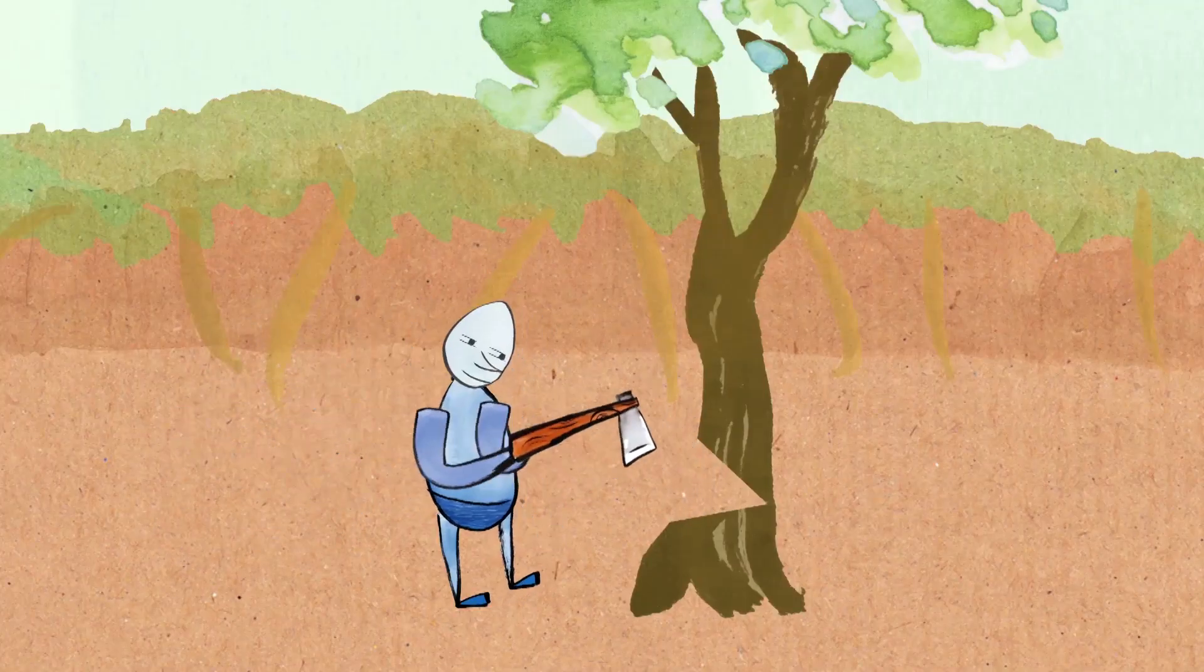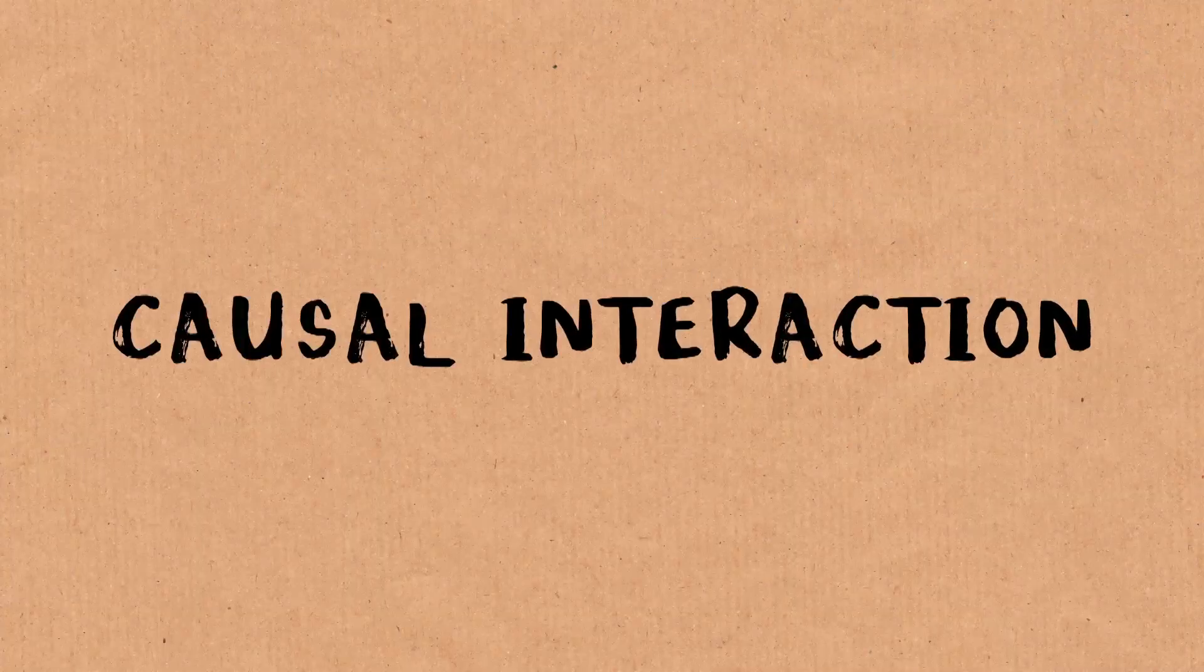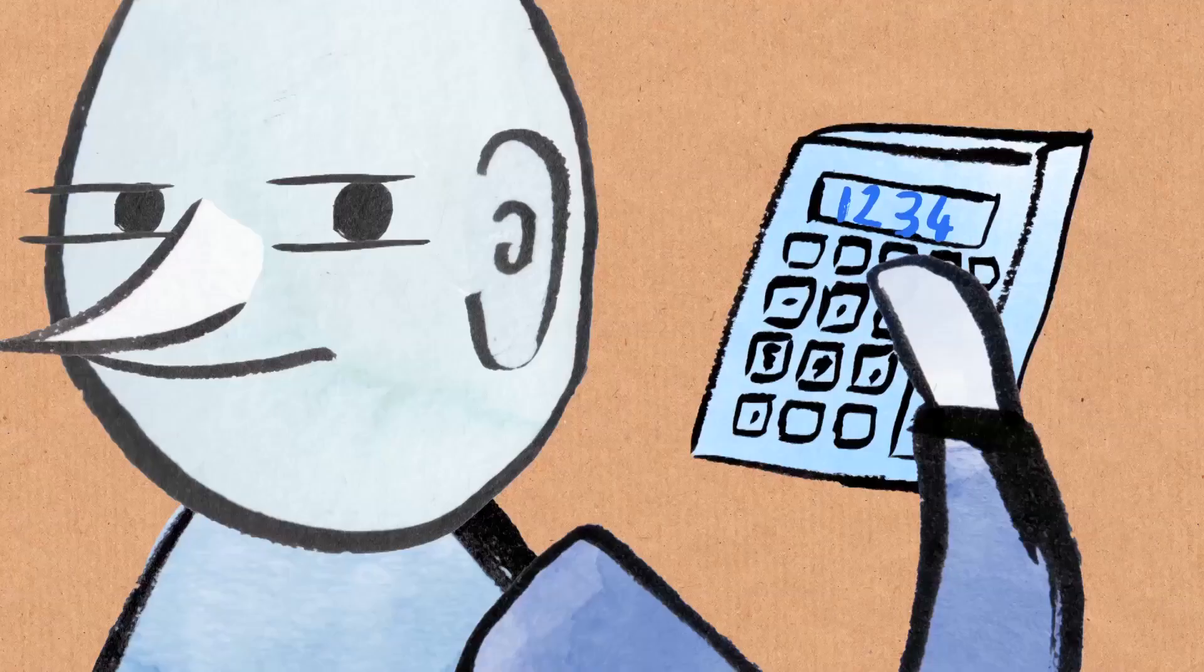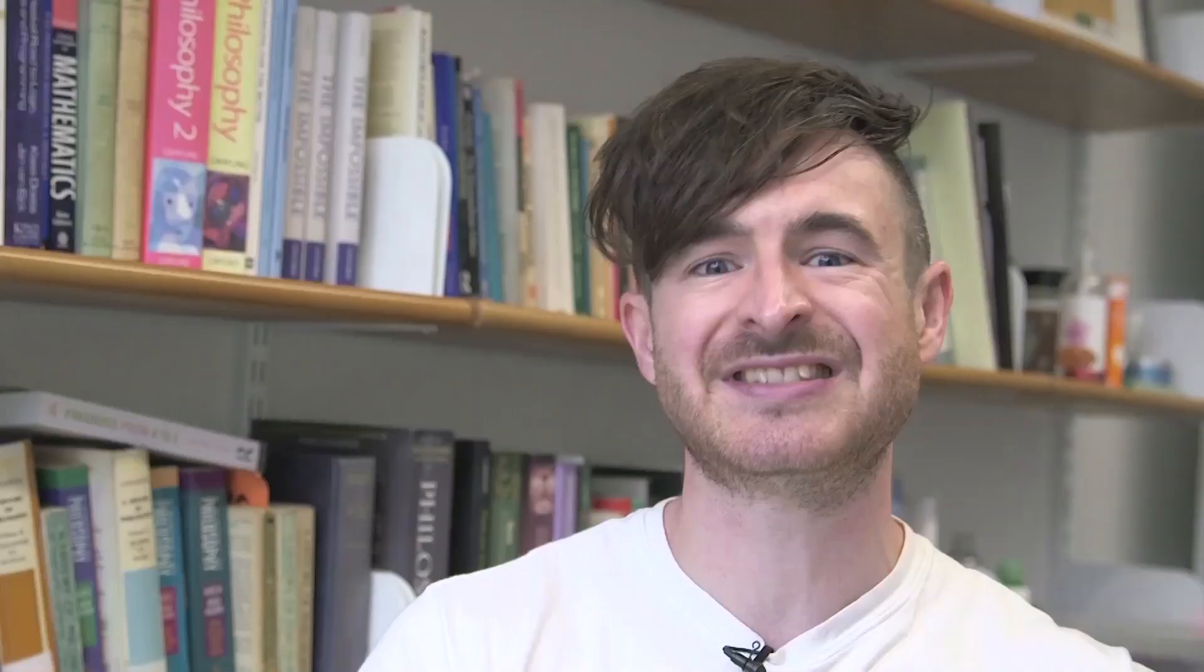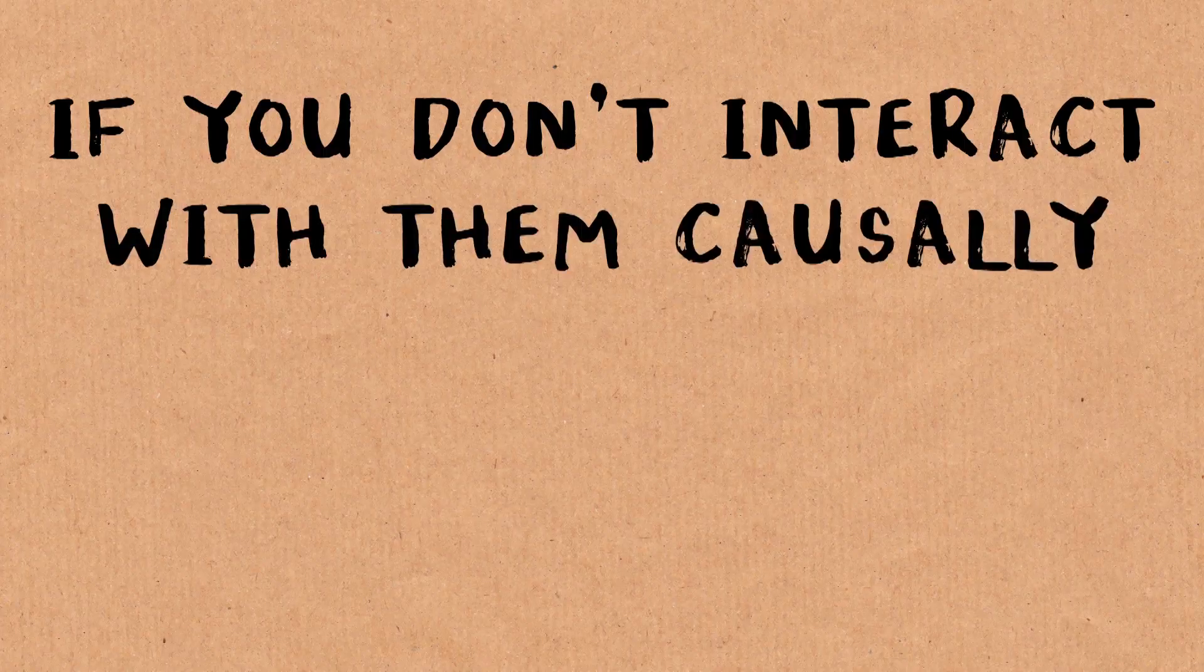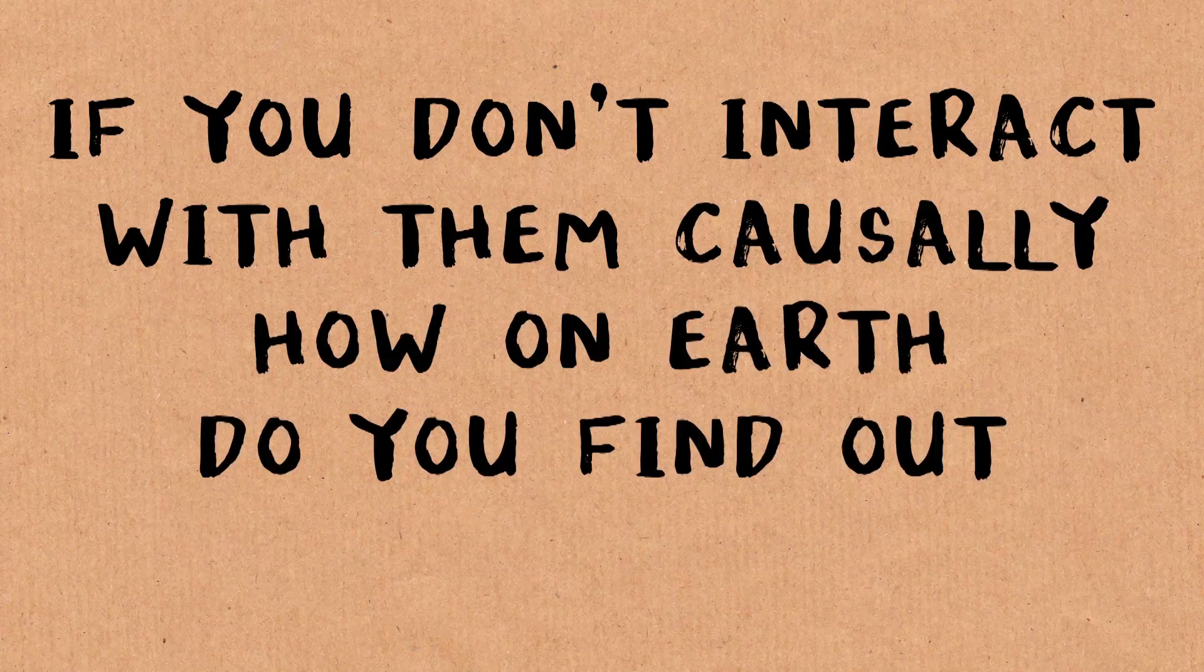The way you find out about the world, in nearly every case, is by having some kind of physical causal interaction. Either you see it, you hear it, you smell it, or someone who's done those things tells you about it. That's all a causal interaction. But numbers, at least on most people's theory, they're not physical things, they don't causally interact with us. So that raises the question, if you don't interact with them causally, how on earth do you find out about them?